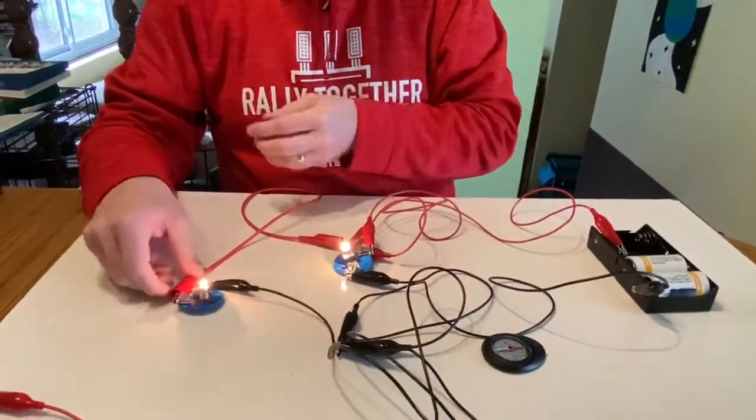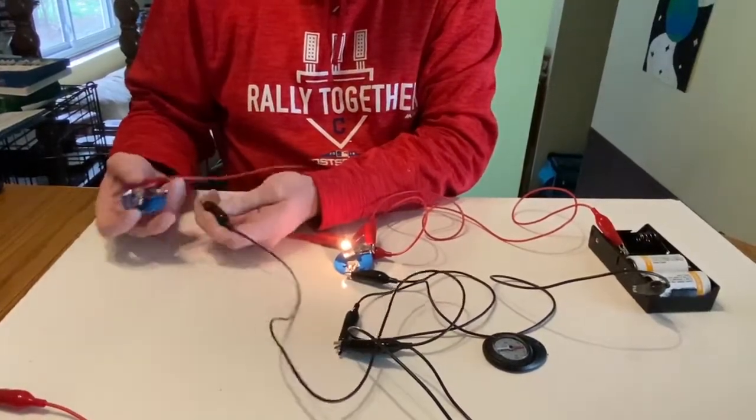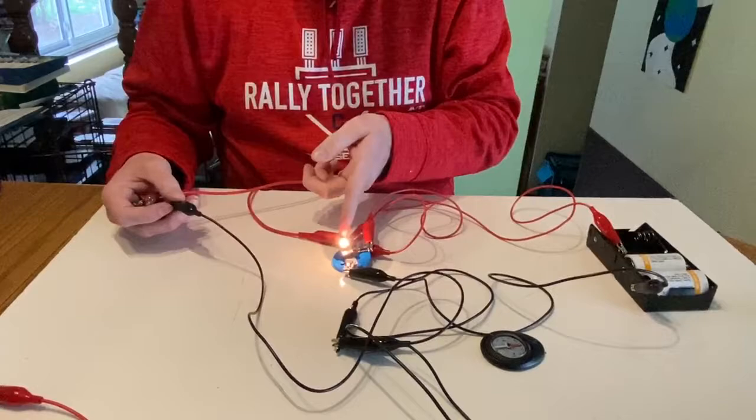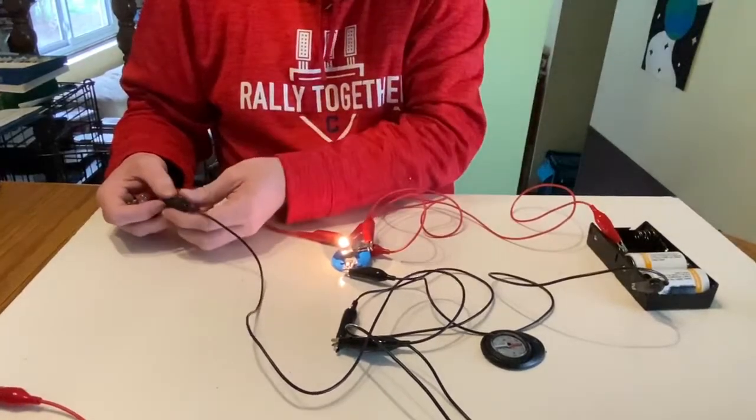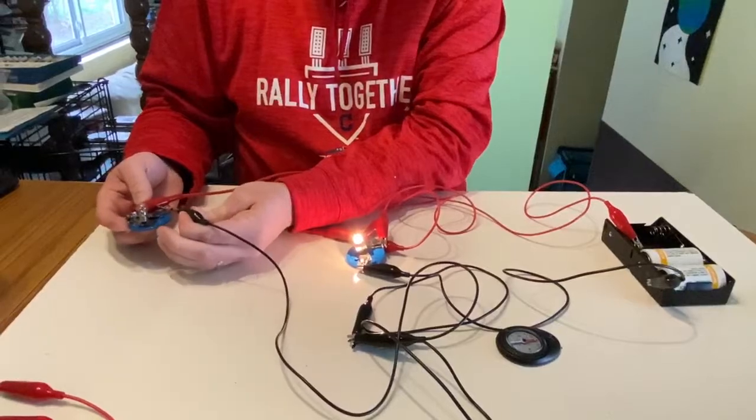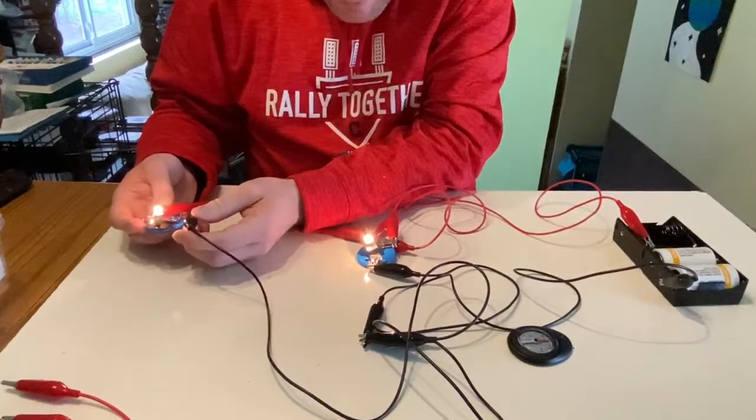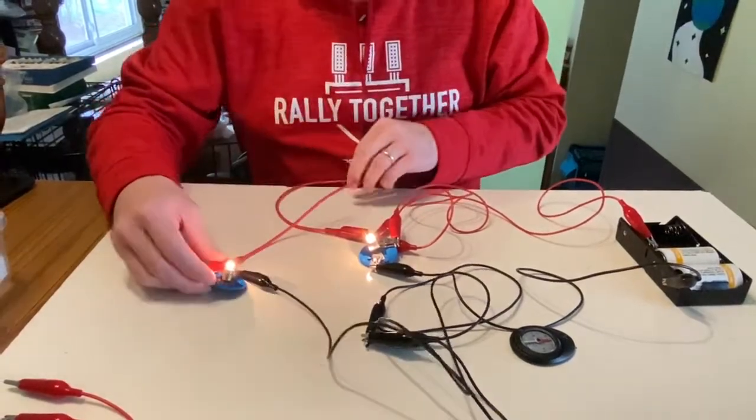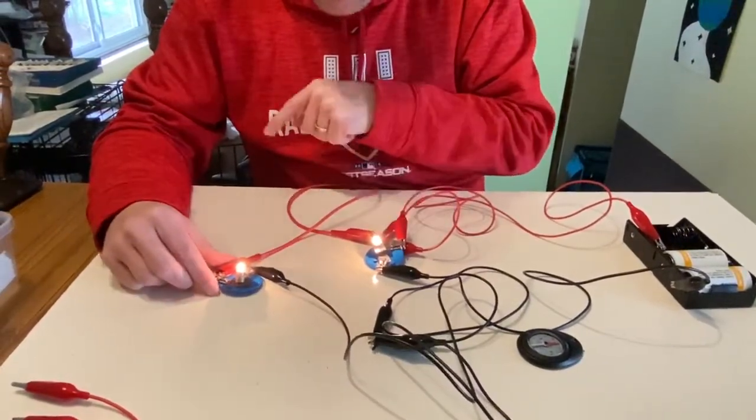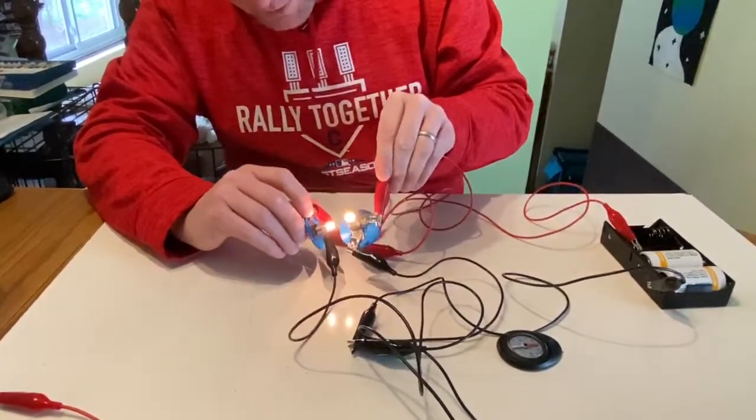So something else that we should look for is, how is the brightness different? When I just had one bulb, that's the brightness. Now I add that second bulb on its own loop. And I can see maybe just the tiniest of shifts in the brightness of that bulb. These two bulbs look to me to be about equally bright.